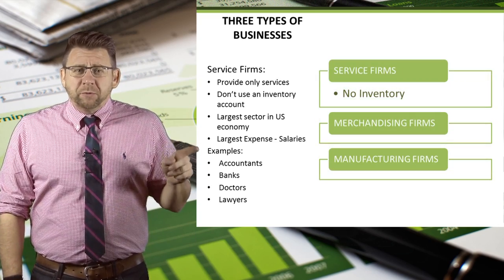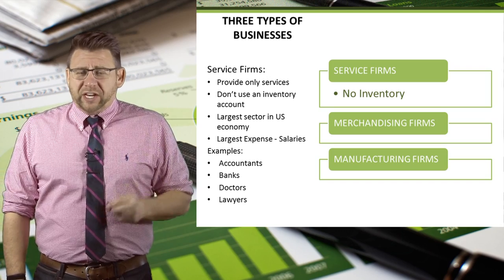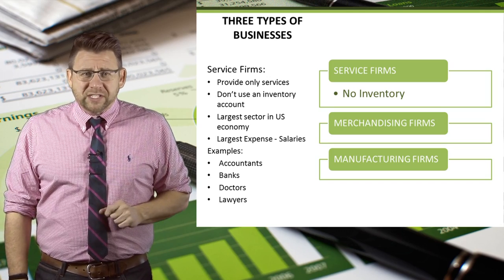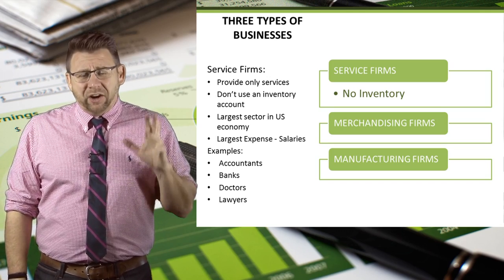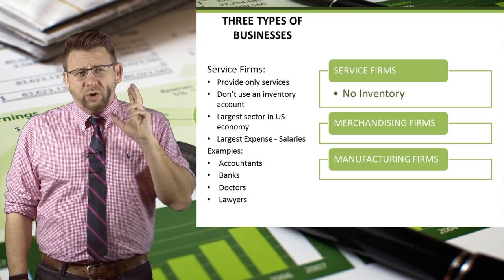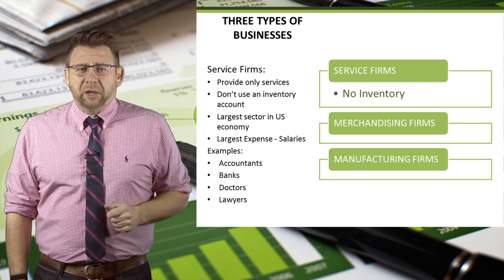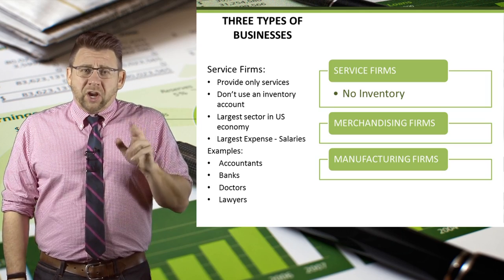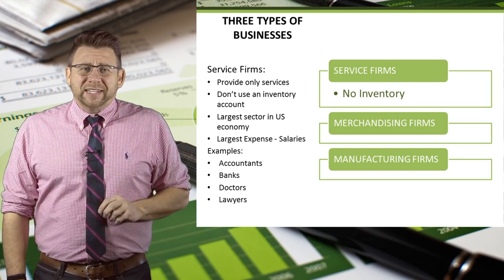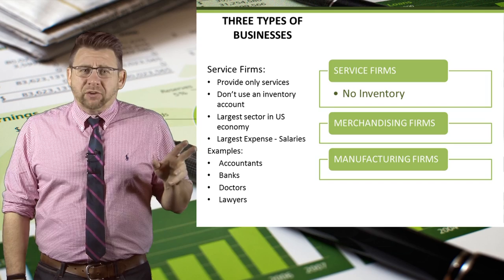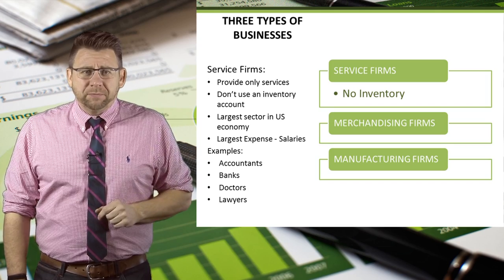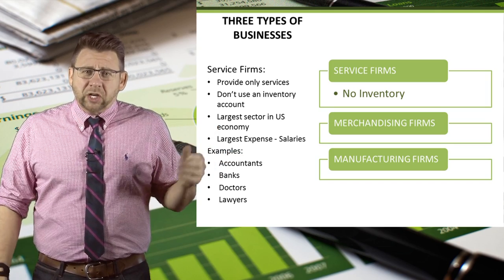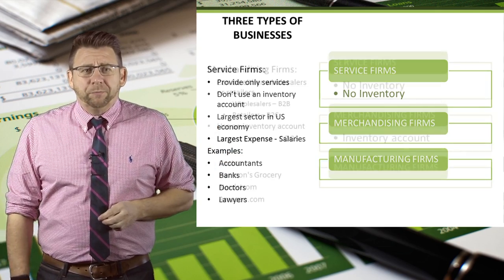Service firms make up the largest sector in the US economy. They provide only services and basically carry no inventory, or an immaterial amount. Their largest expense tends to be salaries and benefits. You can see some examples here, but clearly there are many more.